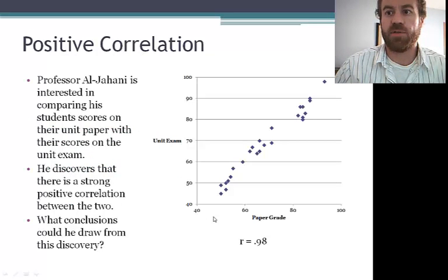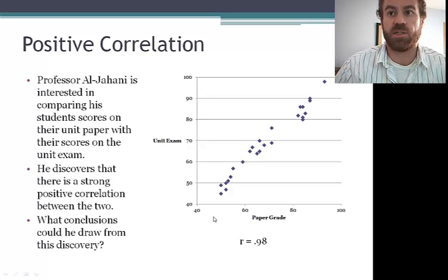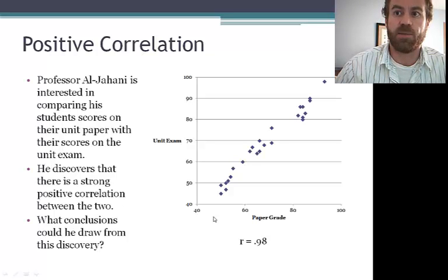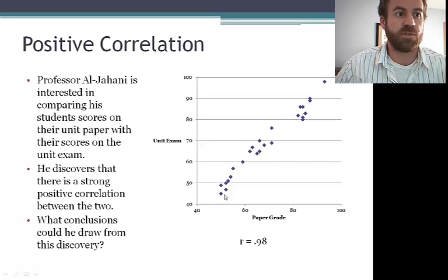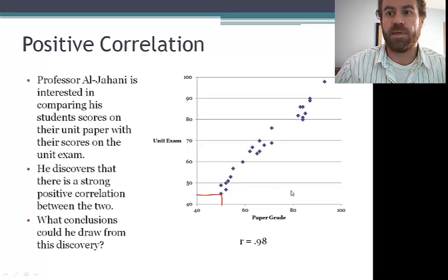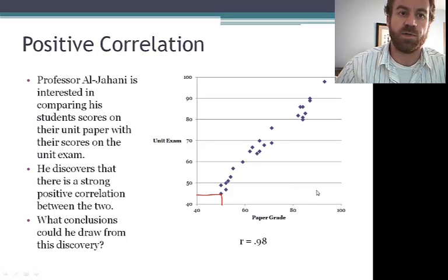Here's an example of a positive correlation. As one score goes up, so does the other. So in this case, Professor Al-Jahani is interested in comparing his students' scores on their unit paper with their scores on the unit exam. And he discovers there's a strong positive correlation between the two. So he may say that, okay, if a student scored low on the paper, it's highly likely they're going to score low on the exam. This might suggest to the professor that the system he used to grade the papers is an accurate predictor of how well the student will do on the test.